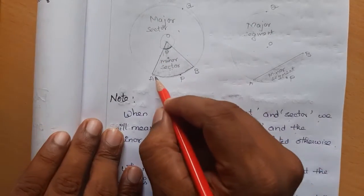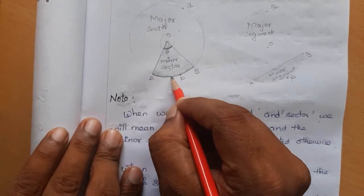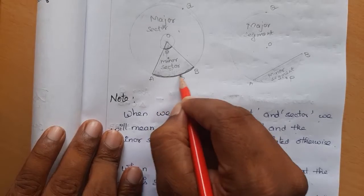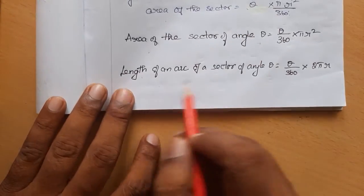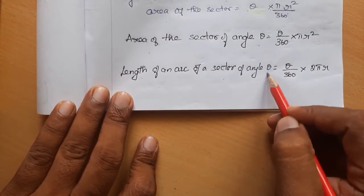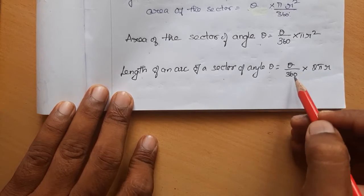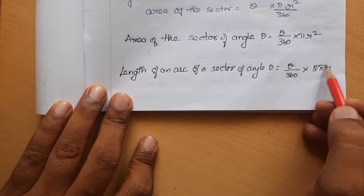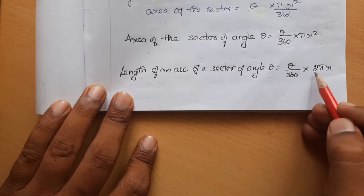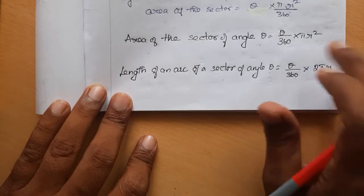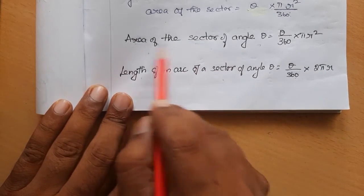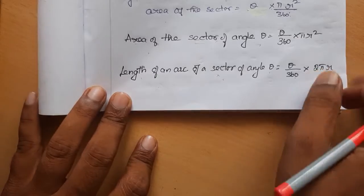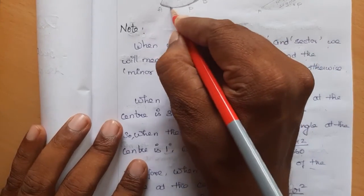Similarly, we can find the arc length. The full length is the circumference. The length of the arc of a sector of angle theta equals (θ/360) × 2πr, the same ratio applied to the full circumference. This gives us both the sector area and arc length formulas.